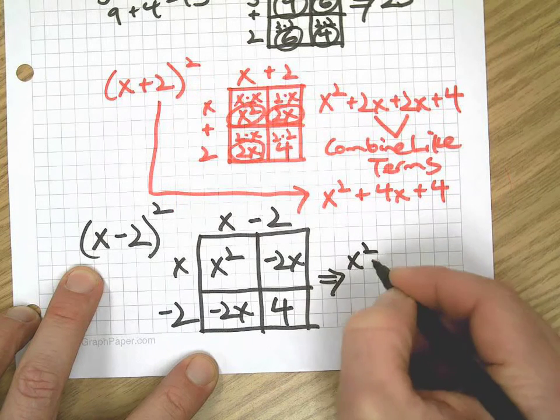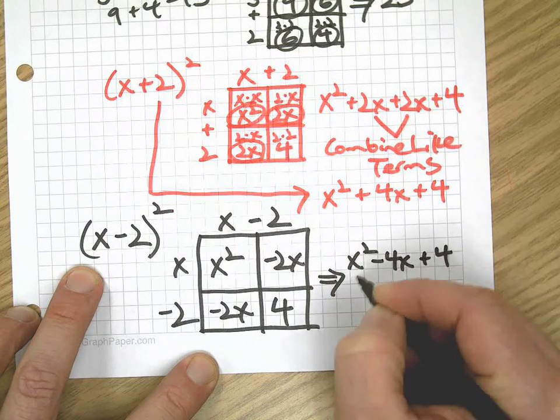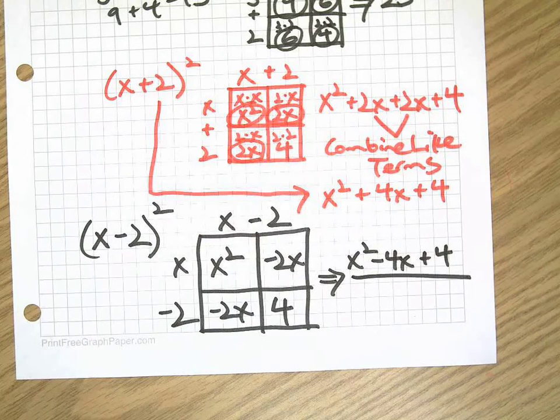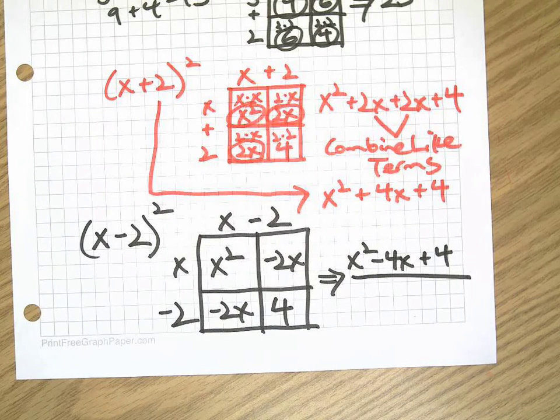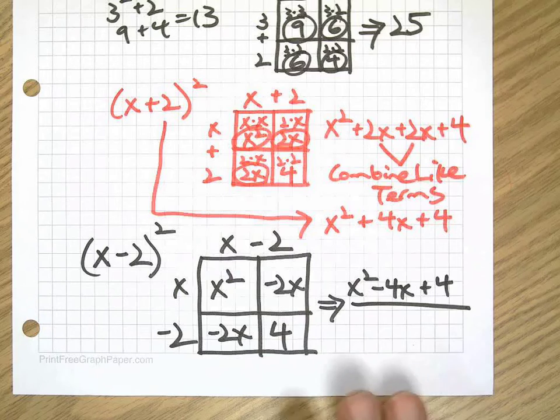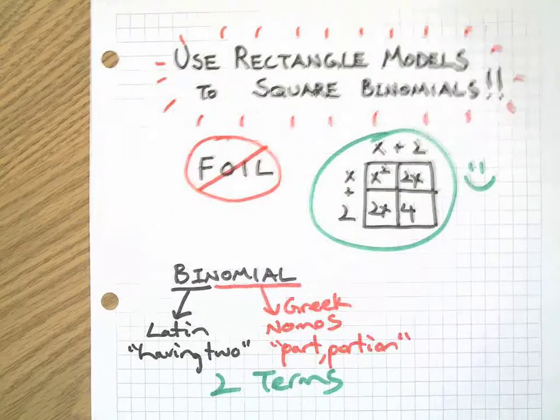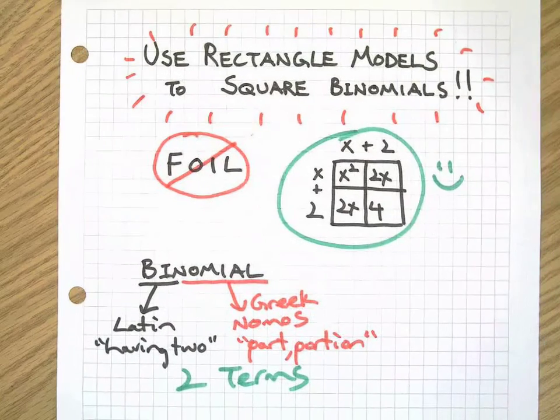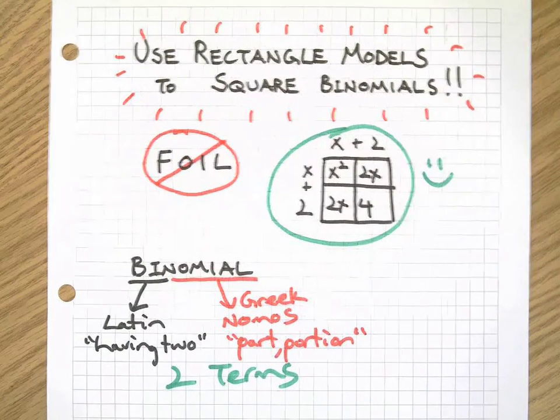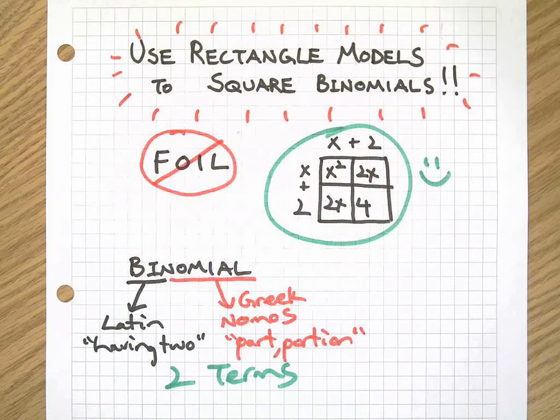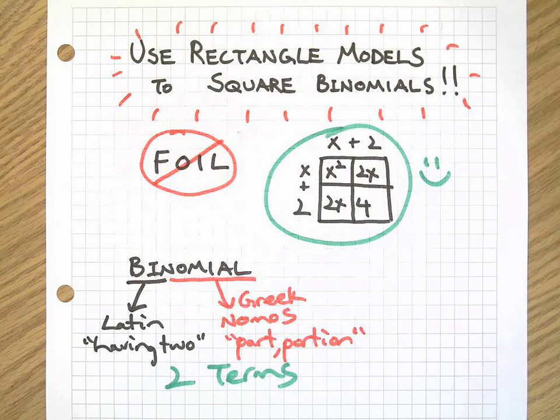Which gives us x squared minus 4x plus 4. Rectangle model! So stay tuned, and we are going to use a rectangle model not just to square binomials but to multiply them. So please stay tuned. We love rectangle models here on the Witcher Math Channel. Thanks for watching, I'll see you later!